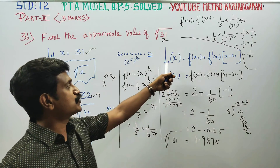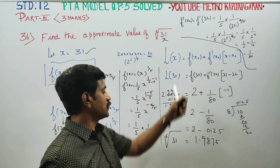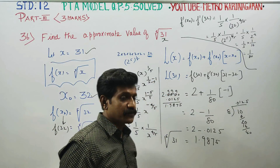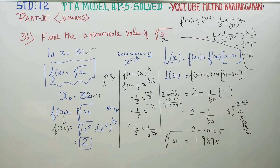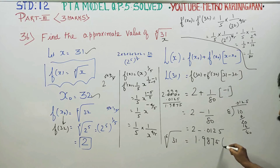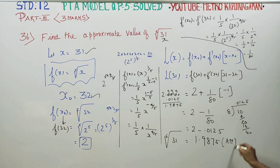In the approximation for 31, we have the 5th root of 31. Therefore, your answer will be approximately 1.9875. Thank you.